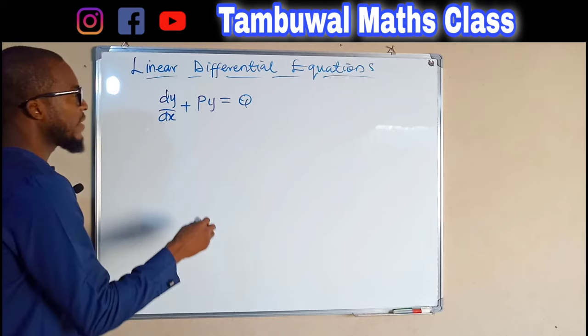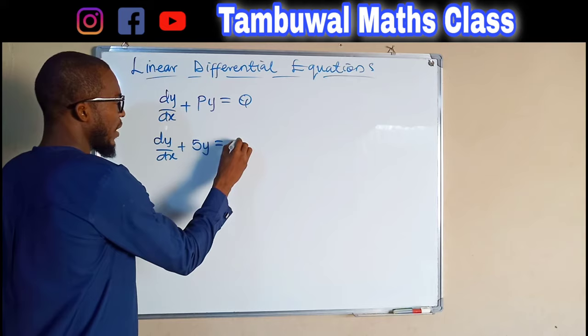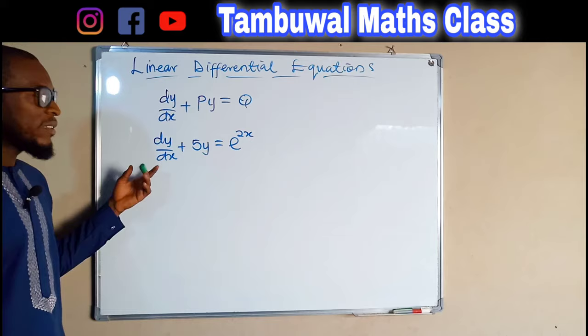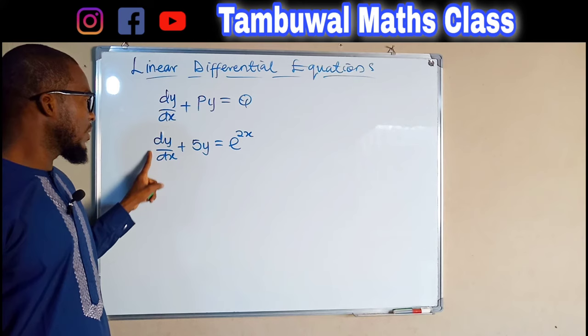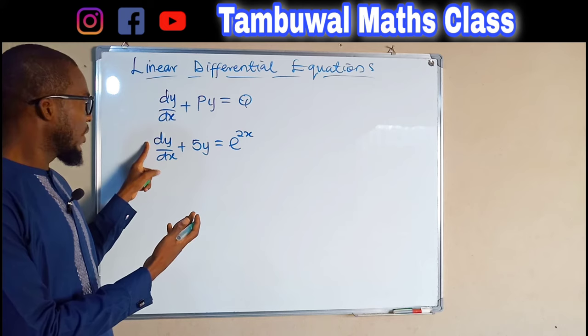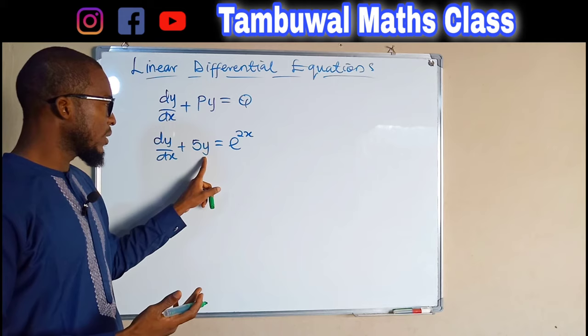For example, suppose we are given dy/dx + 5y = e^(2x). This is a linear differential equation for several reasons. First, we have a first order differential equation, dy/dx, whose coefficient is 1, which is a constant. A linear differential equation's coefficient can never be any function of y. We also have 5y here, where y is to the first degree.